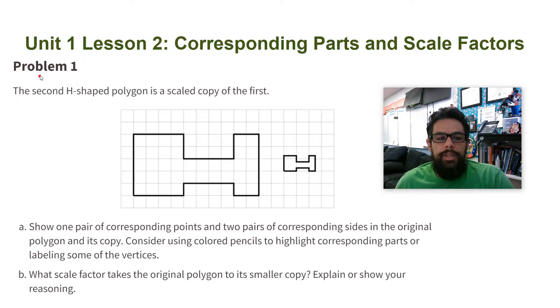The second H-shaped polygon is a scaled copy of the first. Part A: show one pair of corresponding points and two pairs of corresponding sides in the original polygon and its copy. Consider using colored pencils to highlight corresponding parts or labeling some of the vertices.